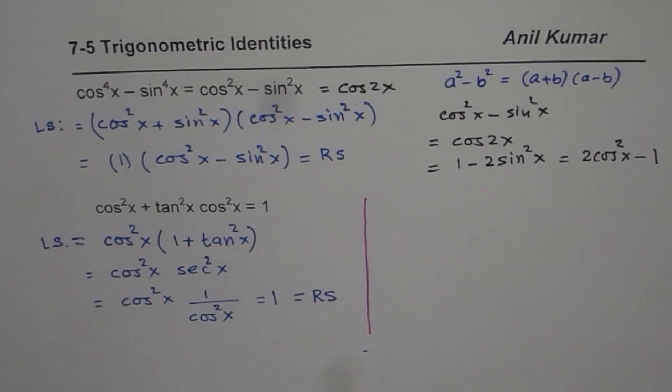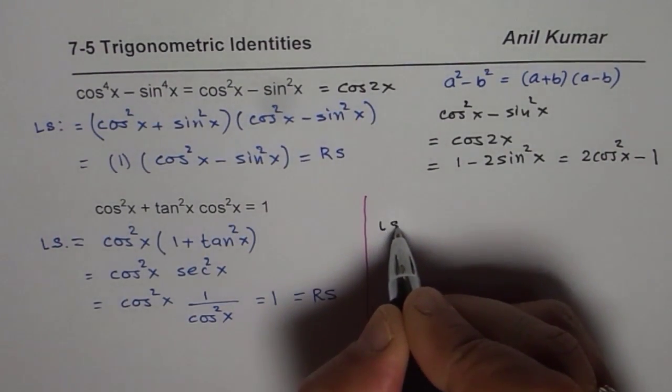Now for any identity you will also notice that we have more than one method to apply. For example here itself we could use alternate method to prove. And that is also a good strategy.